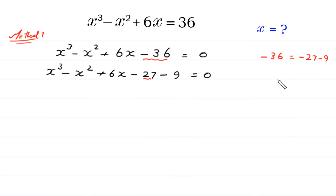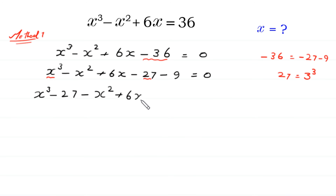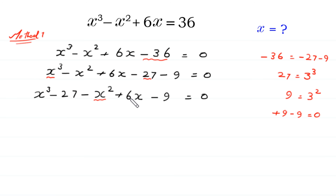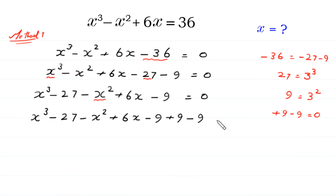Now, because 27 is equal to 3 cubed, we write this 27 with this x cubed like this: x cubed minus 27. Then we have negative x squared plus 6x minus 9 is equal to 0. Because 9 equals 3 squared, we add and subtract 9 in the form of 0 in the whole expression: x cubed minus 27 minus x squared plus 6x minus 9, and we add 9 and subtract 9, is equal to 0.